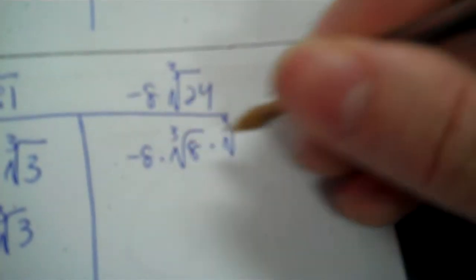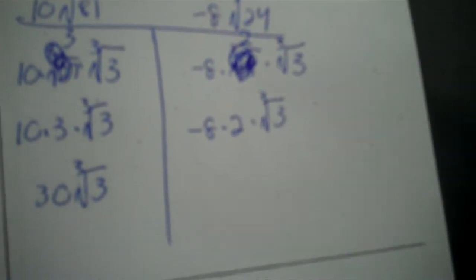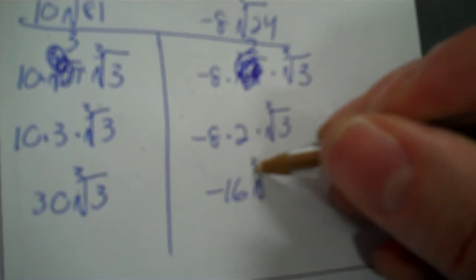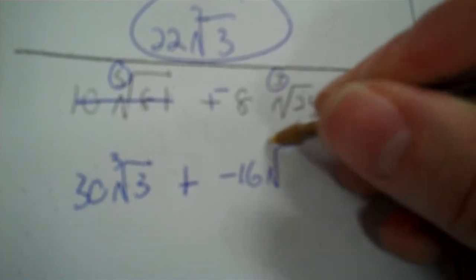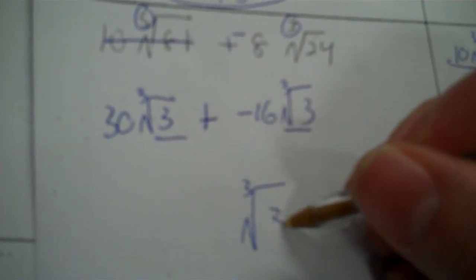Now go simplify the other term. So 24: take 24 divided by 8, and fill that in with 8 and 3 — you're breaking that into 8 times 3. The cube root of 8 is 2. So you have negative 8 times 2 times the cube root of 3. Negative 8 times 2 is negative 16, then cube root of 3. So now the insides match — cube root of 3. 30 plus negative 16 is 14.